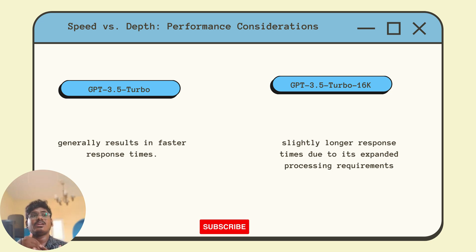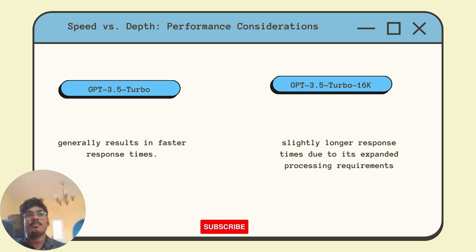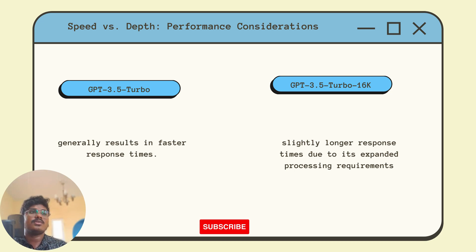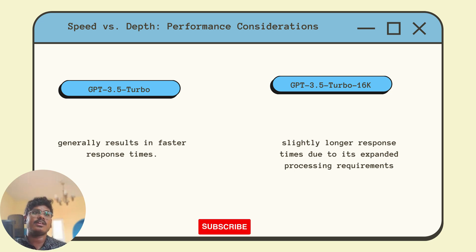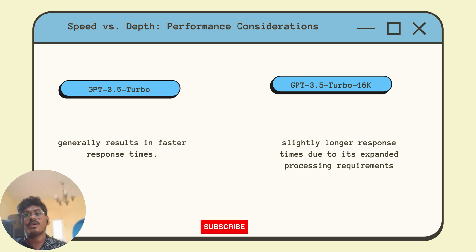Performance factors are also an essential consideration. GPT-3.5 Turbo's smaller token limit generally results in faster response times, making it ideal for applications demanding real-time interaction like common chat interfaces. GPT-3.5 Turbo 16k might introduce slightly longer response times due to its expanded processing requirements. Your choice should align with the balance between response speed and depth of content.